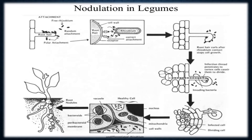Root hairs are the first line of contact for Rhizobium. Rhizobium are freely present in the soil, and as soon as they come in contact with the root hair, they degrade it, invade the tissue, and produce an infection thread. The second diagram shows how Rhizobium gets in contact with the root hair and degrades its cell wall.